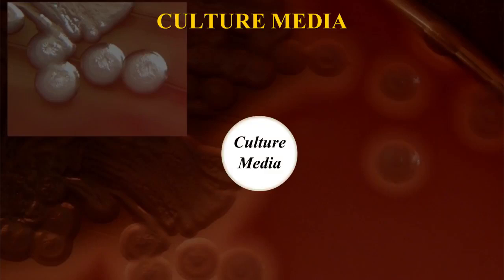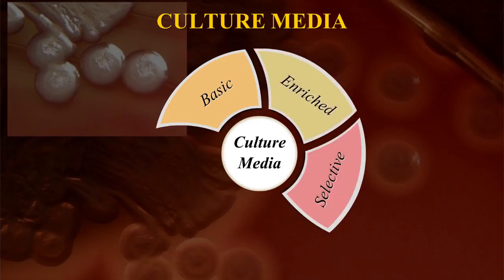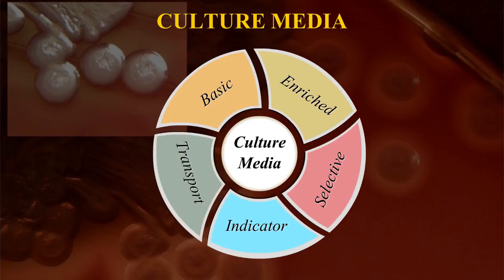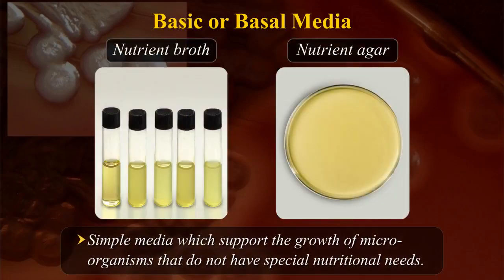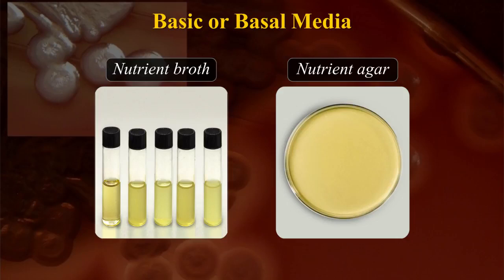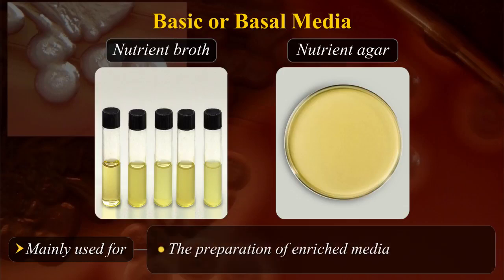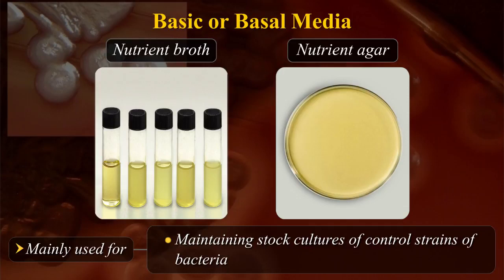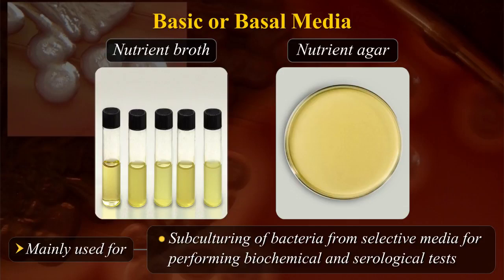Culture media can also be classified as basic, enriched, selective, indicator and transport. Basic or basal media are simple media which support the growth of microorganisms that do not have special nutritional needs. Examples are nutrient broth and nutrient agar. These are mainly used for the preparation of enriched media, for maintaining stock cultures of controlled strains of bacteria, and for subculturing of bacteria from selective media for performing biochemical and serological tests.